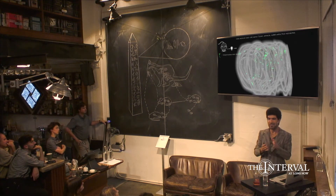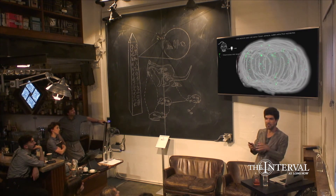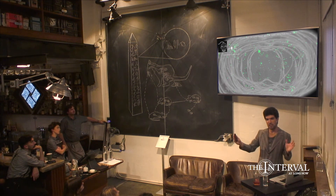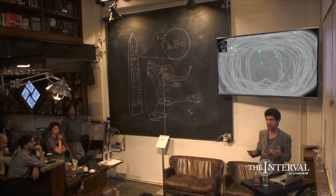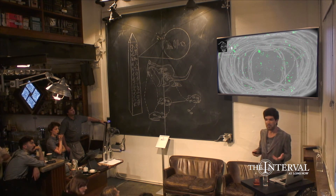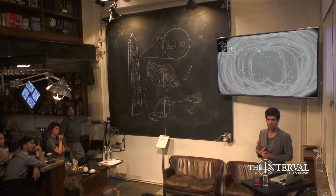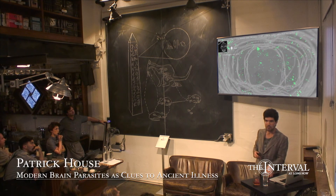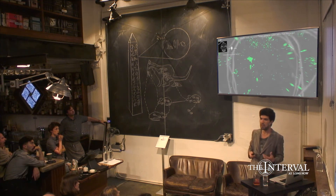Some animals with the parasite were not afraid of the cat at all; some became less afraid — so there's a wide range of behavioral change. The fact that the parasite goes everywhere is actually consistent with that data. What may be happening is that the parasite randomly distributes throughout the host brain, and only if it ends up in a particular brain region does the animal become less afraid.